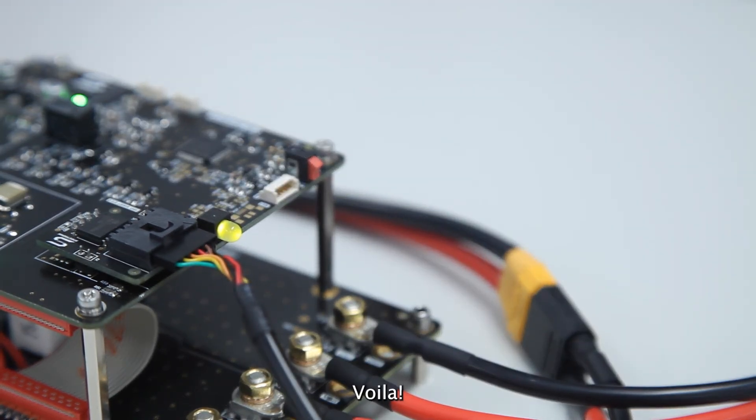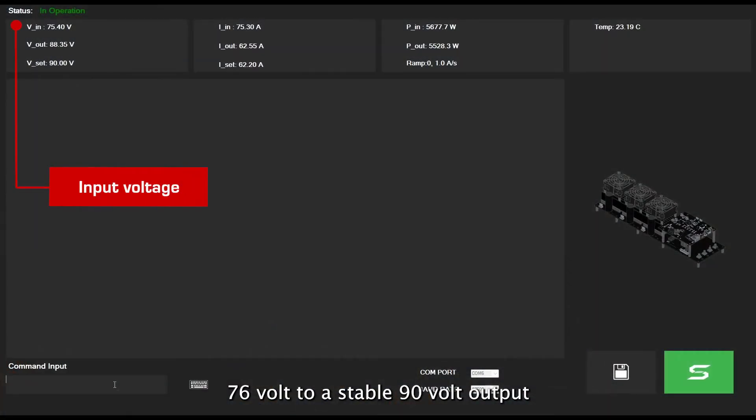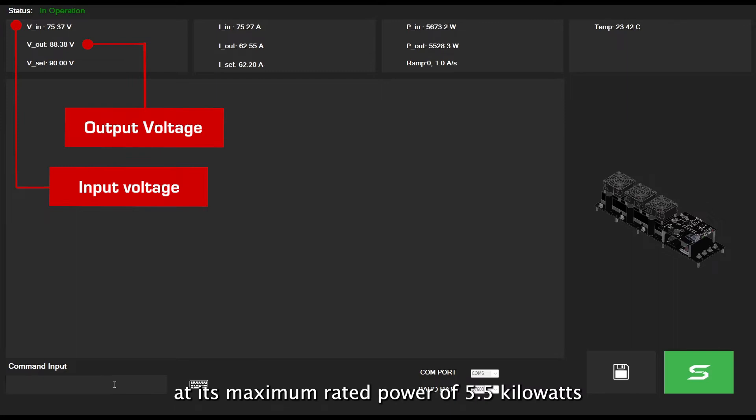Voila! We have successfully stepped up 76V to a stable 90V output at its maximum rated power of 5.5kW and efficiency of 96%.